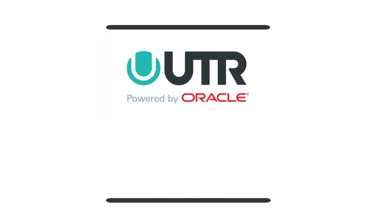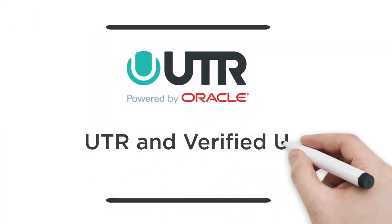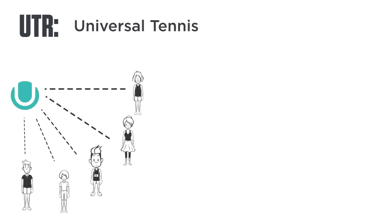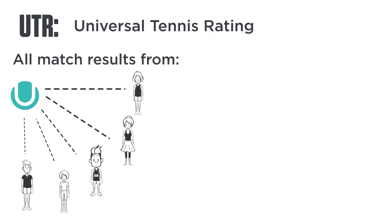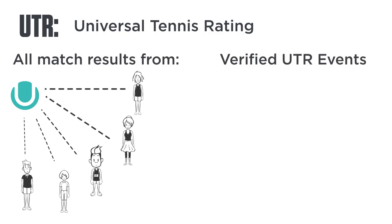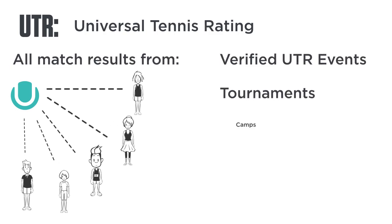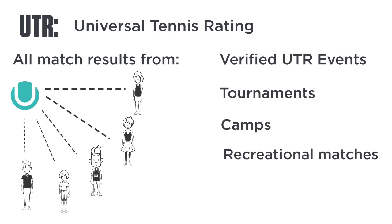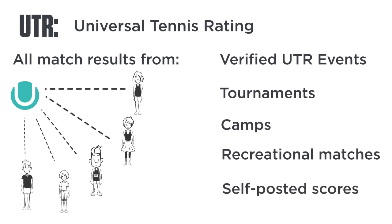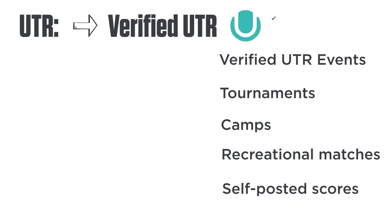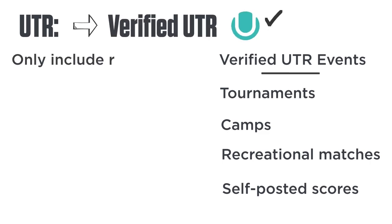What is the difference between UTR and verified UTR? Anyone who plays tennis can have a UTR, also known as Universal Tennis Rating. UTR counts all match results, including verified UTR events, tournaments, camps, recreational matches, and even self-posted scores.